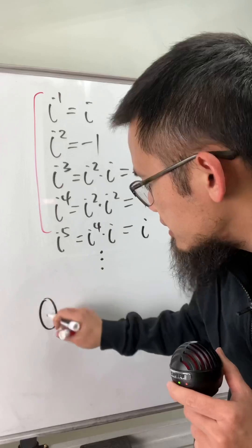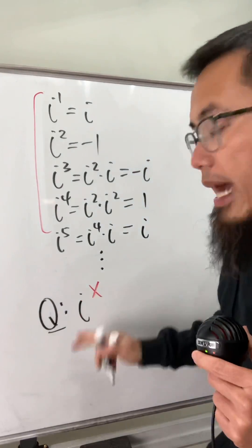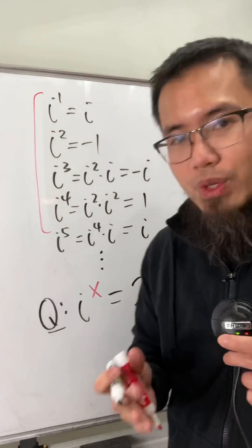My question for you guys is this. Is it possible to have some power right here, i to some power, and then we end up with the number 2. What do you guys think?